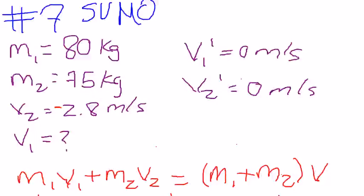I'm doing number 7 of the sumo worksheet, and the problem reads: What velocity must a Hokie linebacker who weighs 80 kilograms hit a UVA running back who weighs 75 kilograms, running at a velocity of 2.8 meters per second, to make the running back stop dead in his tracks short of the end zone?